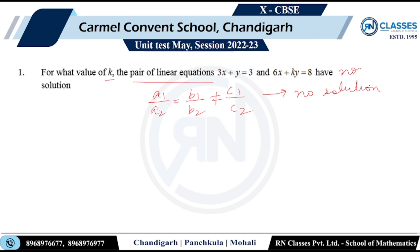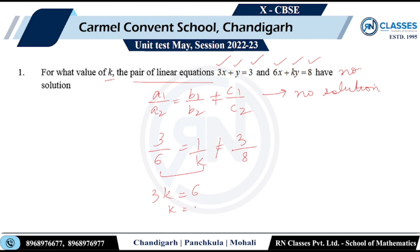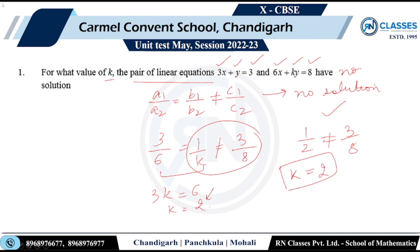Applying the condition: a1 is 3, a2 is 6, b1 is 1, b2 is k. From the first two ratios: 3/6 = 1/k, giving 3k = 6, so k = 2. Checking the inequality: 1/2 is definitely not equal to 3/8, which confirms k = 2.